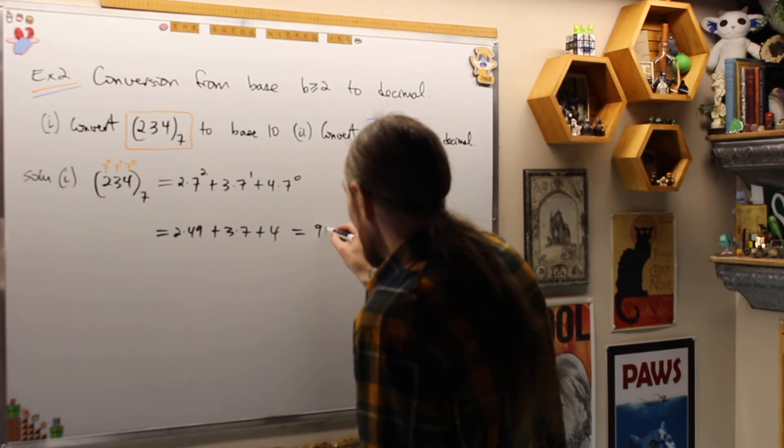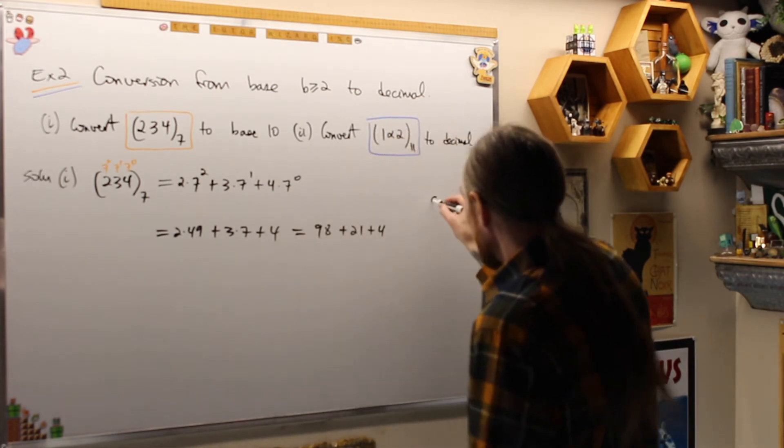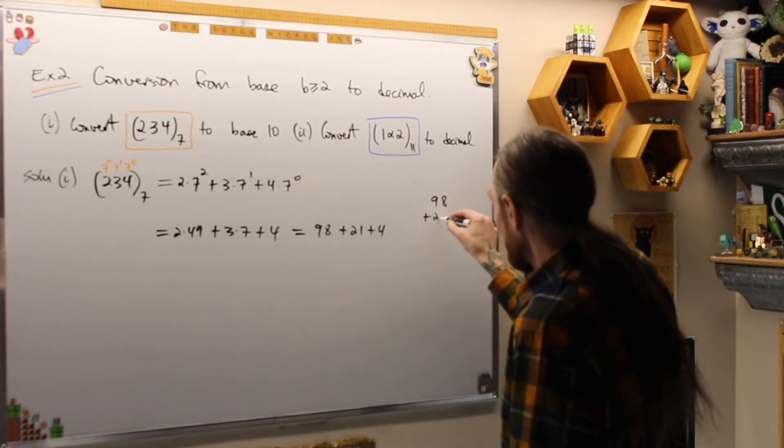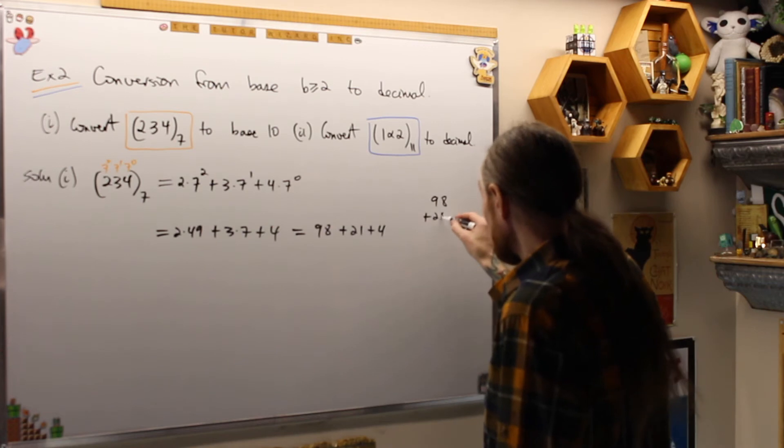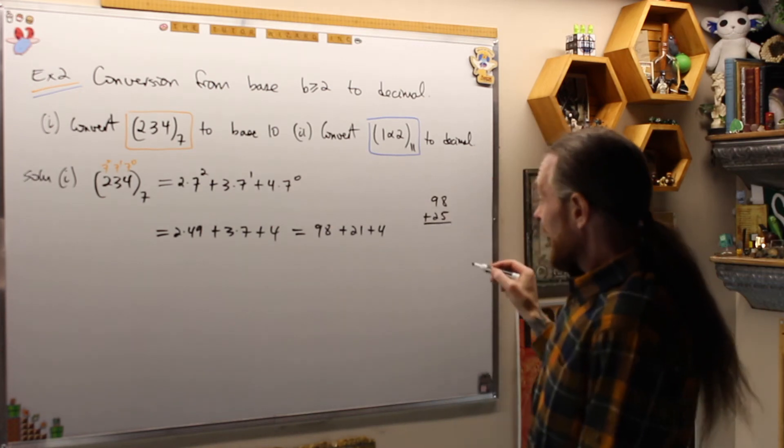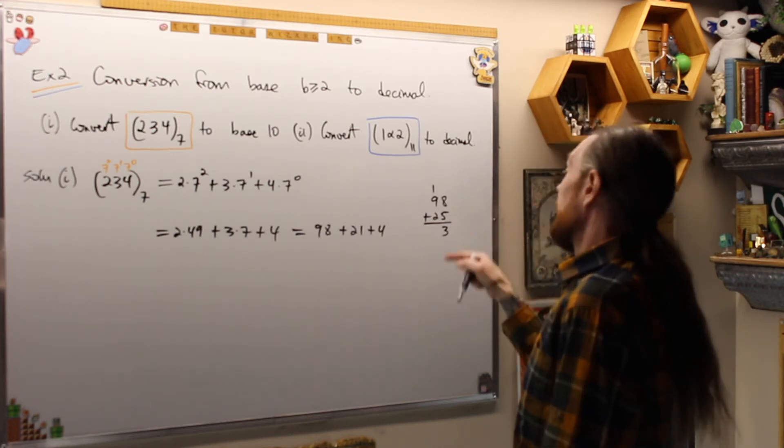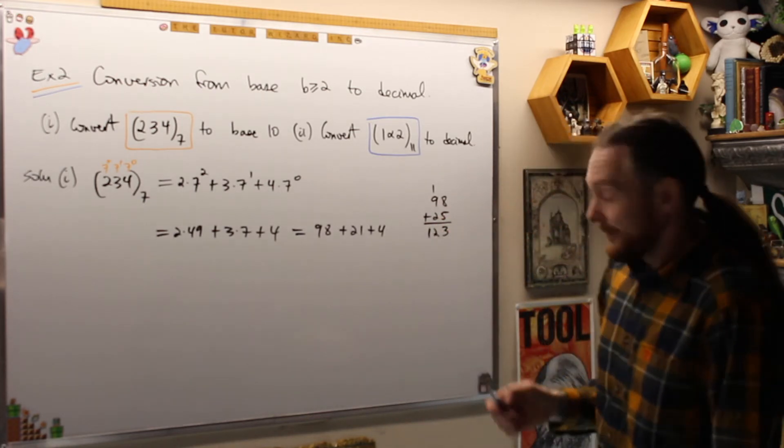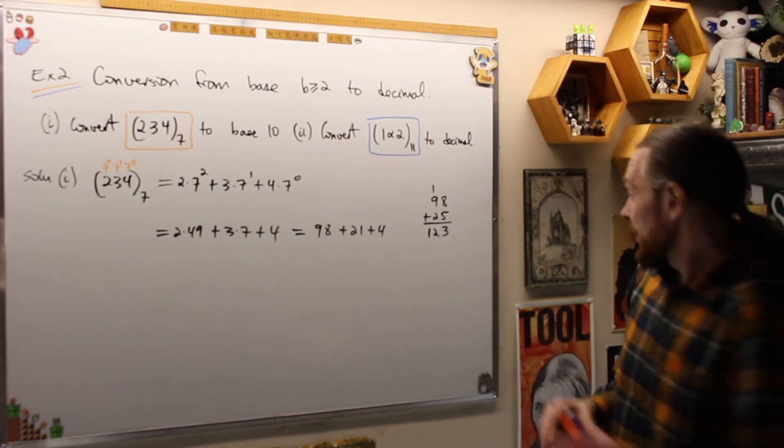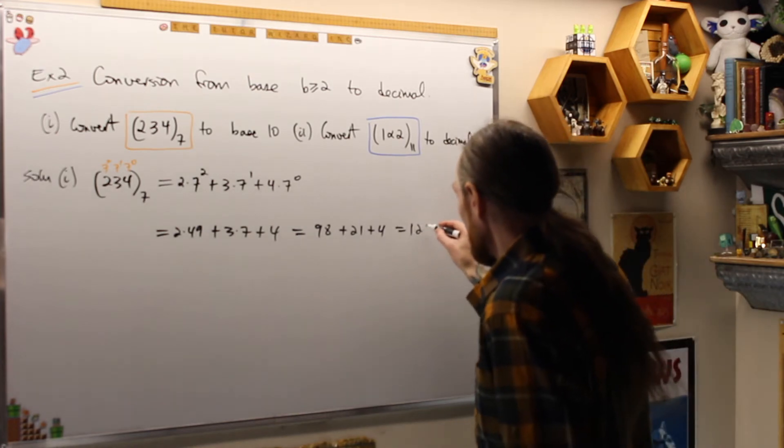But base 10, this is going to be 98 plus 25, so I'm going to get 13, I carry a 1, a group of 10 over, and then I'm going to get 9, 10, 11, 12, so I get 123. So I could have left it, but this equals 123.